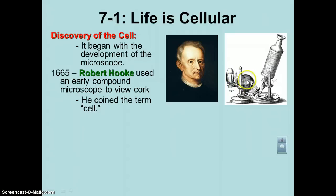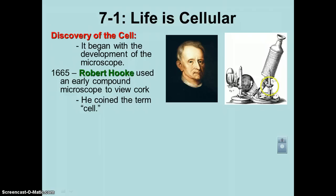The light from the flame would have been focused by these lenses down on the object, which would have been right here. This is a compound microscope, which means there will be two lenses. This is the objective lens, which would be closest to the object. And this is his eyepiece, or the ocular. He would have focused it by moving it up and down using this screw.